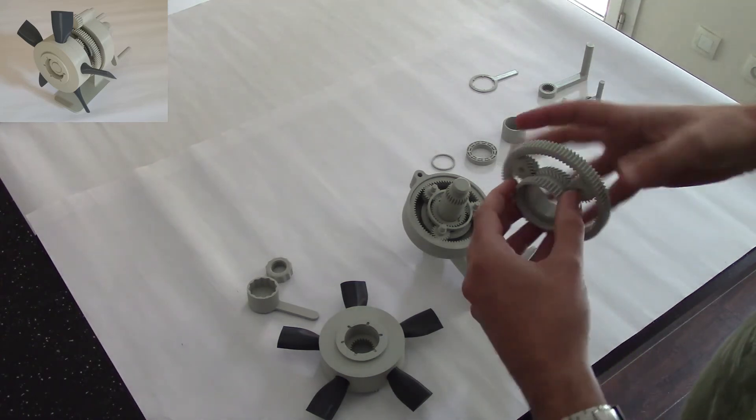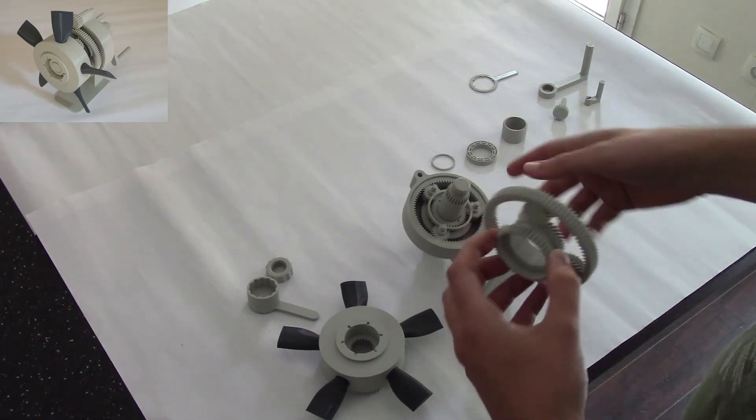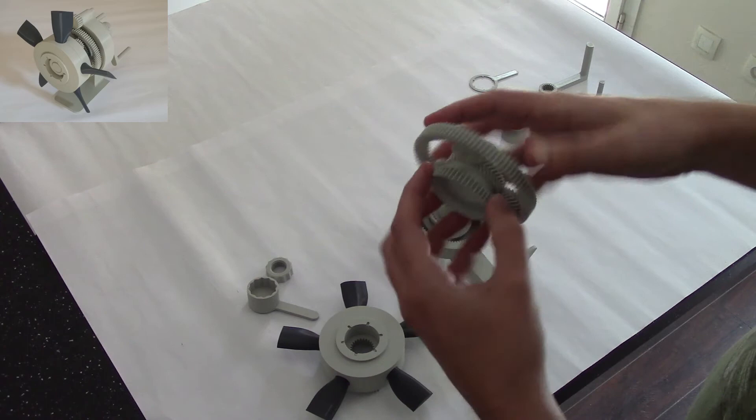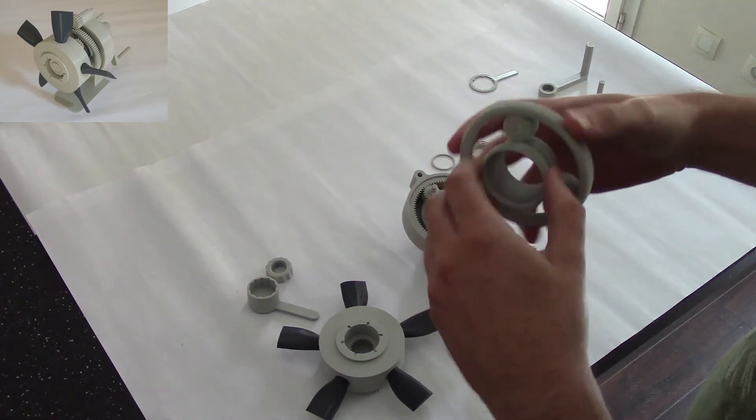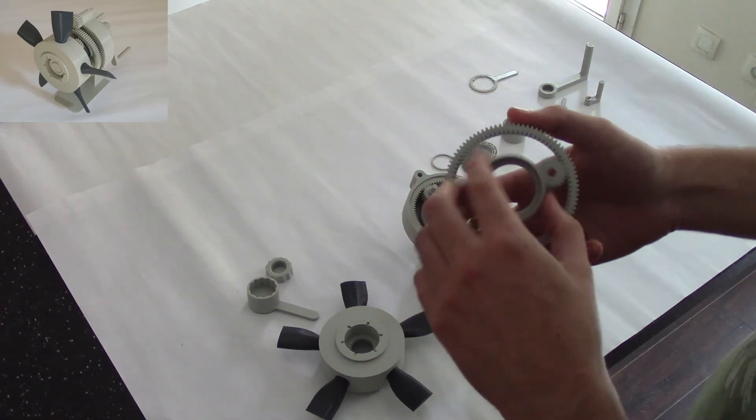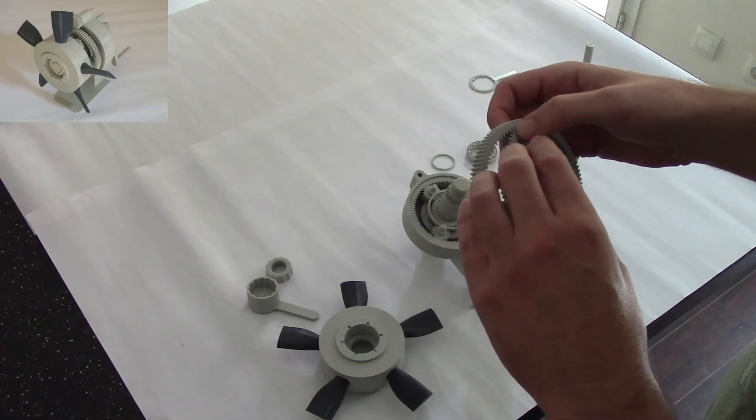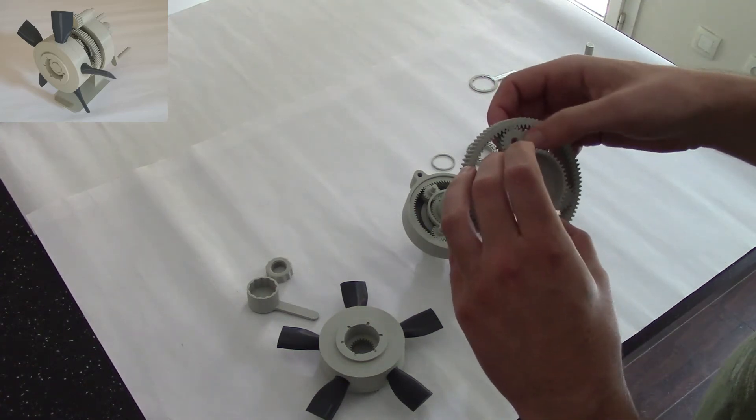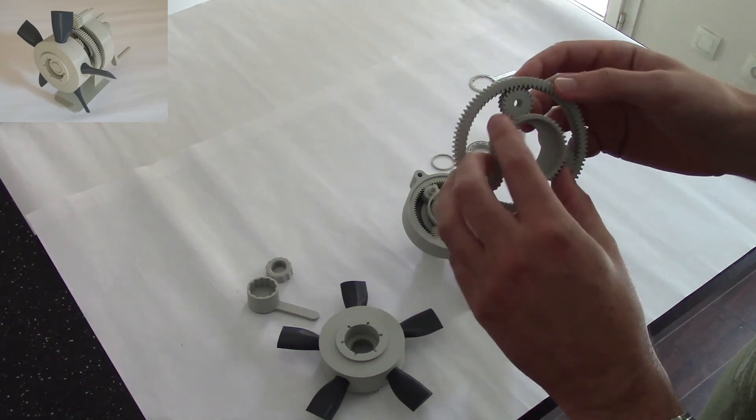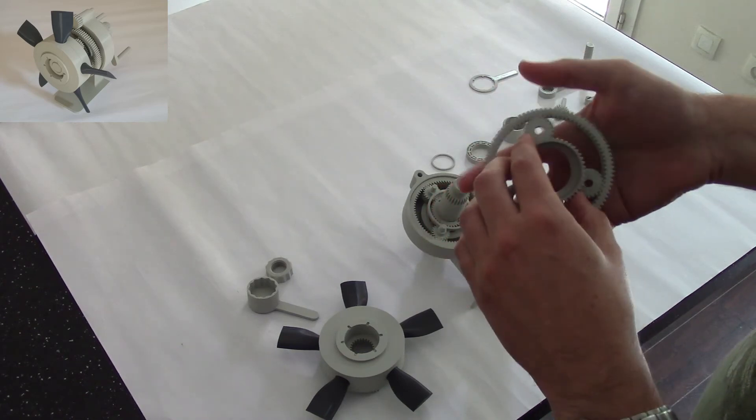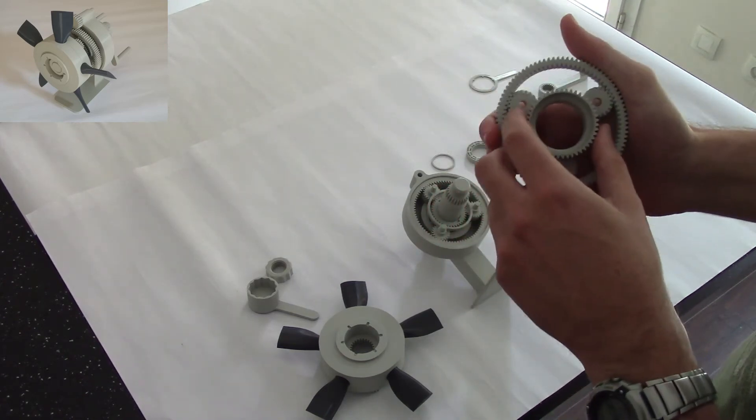Next part is the front planetary assembly. Same thing as the rear. When you print it actually, it might not run properly. The first time you might have some adhesion between the parts due to the low clearances on the printer. Just move it a bit like this, press it.